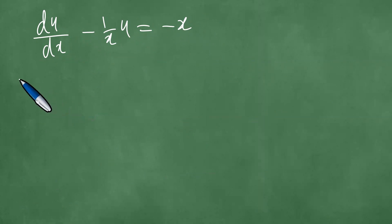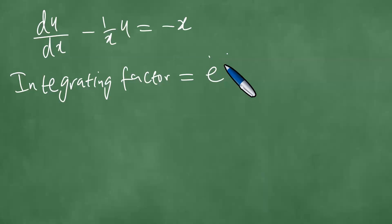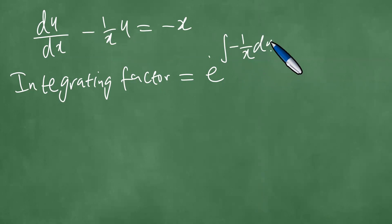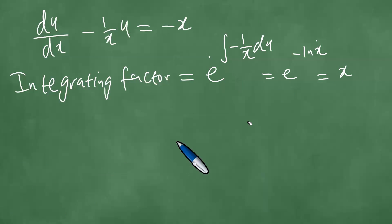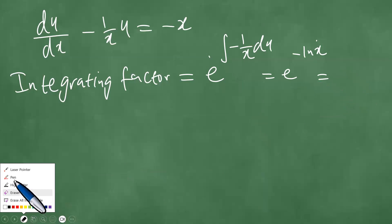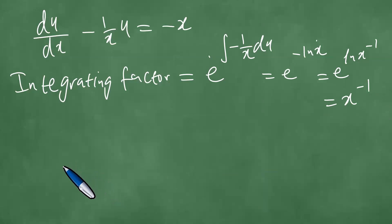We find the integrating factor. The integrating factor is e to the power of the integral of the coefficient of u, which is minus 1 over x. This integral gives minus the natural log of x, so the integrating factor is e to the ln of x to the minus 1, which equals x to the minus 1.